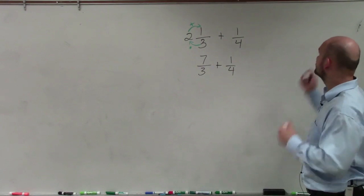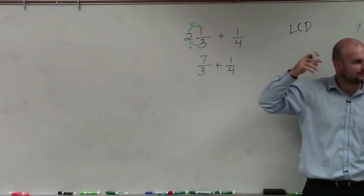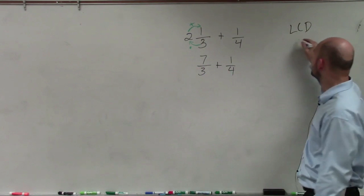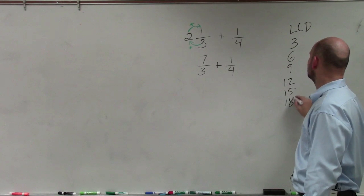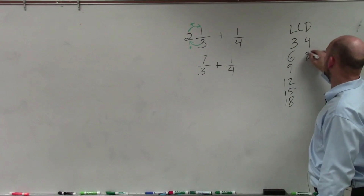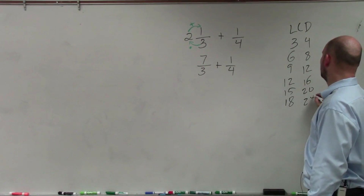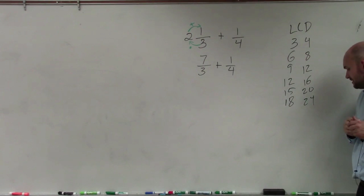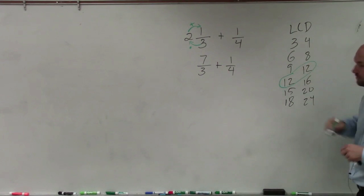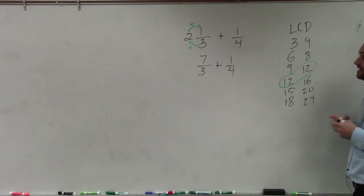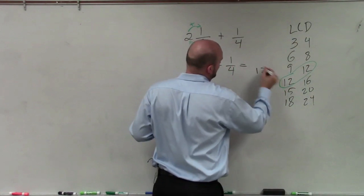I have to get common denominators. To do that, we need to determine the least common denominator. The foolproof method, if you can't do it in your head, is just list the multiples of each denominator: 3, 6, 9, 12, 15, 18 and 4, 8, 12, 16, 20, 24. We want to find the smallest number they both share, which is 12. So our answer is going to have a denominator of 12.